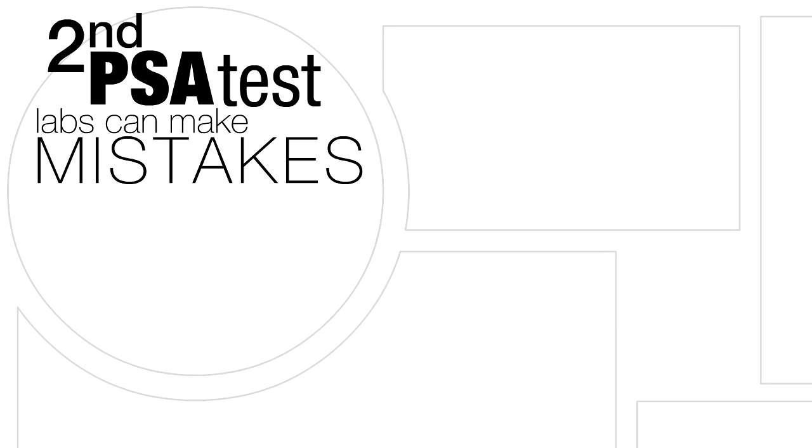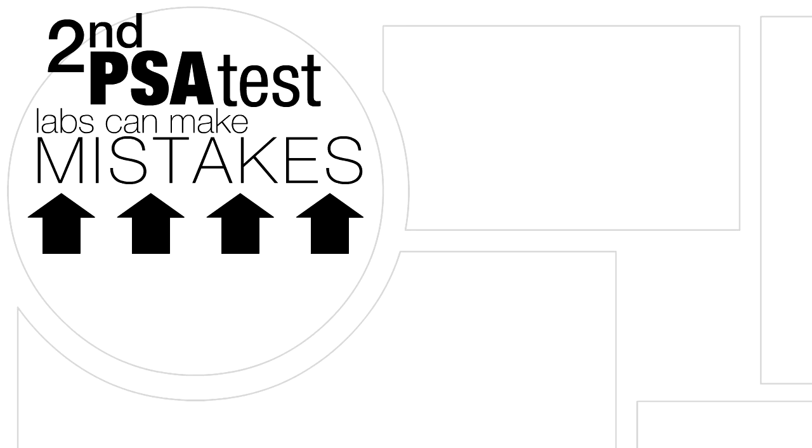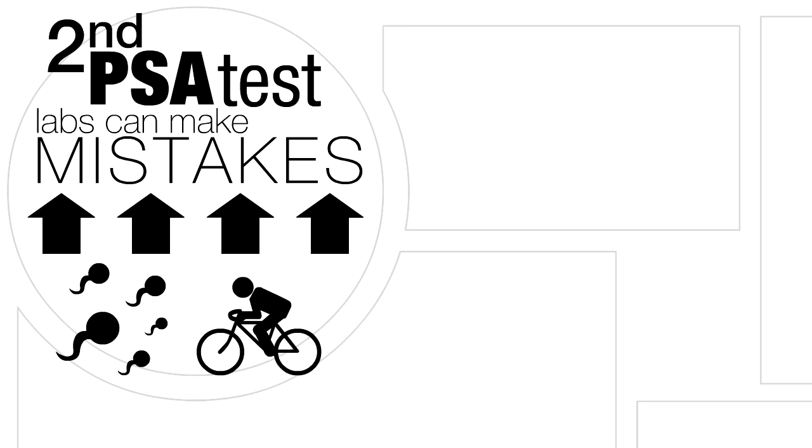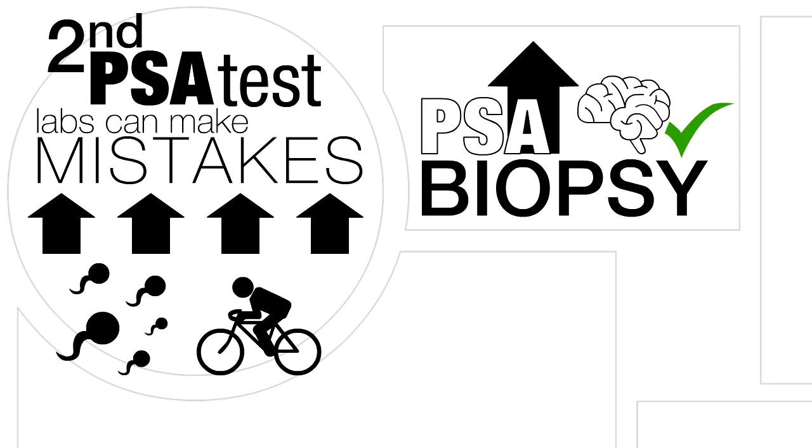First, get a second PSA test. Labs can make mistakes, and PSA can be elevated for reasons other than cancer, things like sexual activity and even riding a bike. If the PSA number is still high, you have options to see if a biopsy is a good idea.